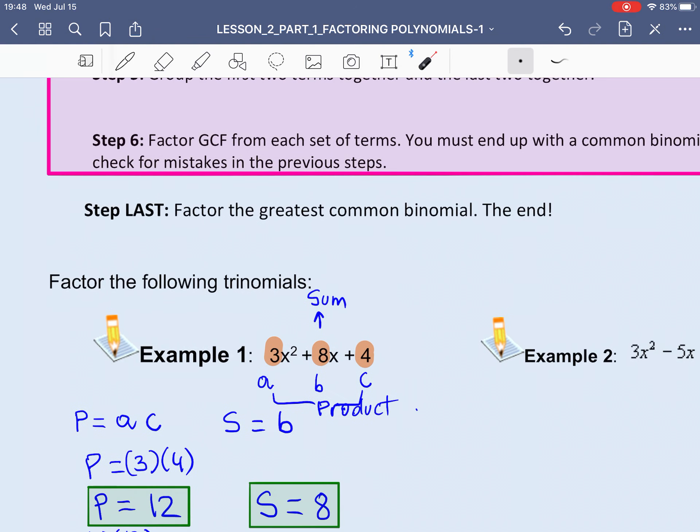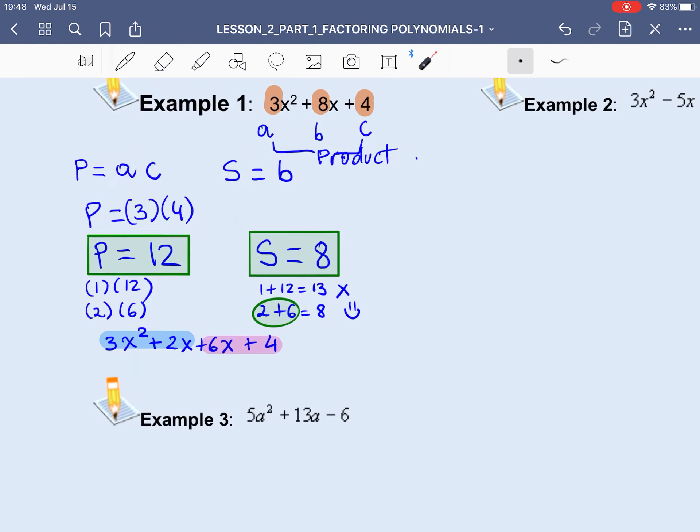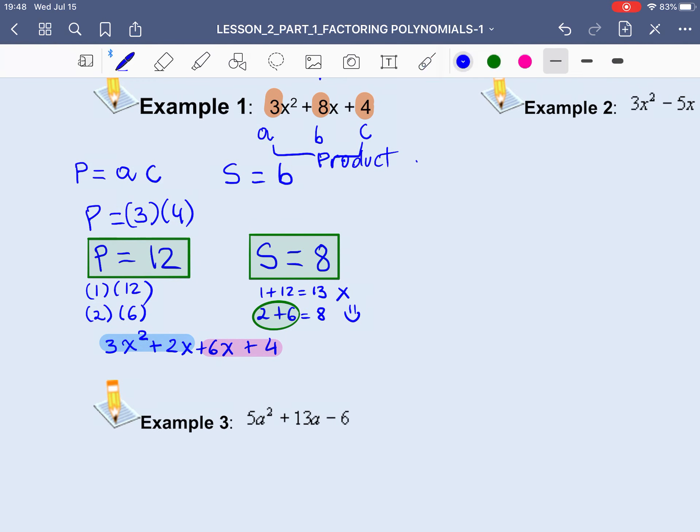And then the next step says you have to factor the greatest common from each set of terms. So from the blue terms in here, I have a common factor of x. If I take x out, then we are left with 3x + 2. And that will be just the blue part of our expression, right, that we have above. And then we do the same thing with the pink terms. We look for the greatest common factor of the pink terms here. And the greatest common factor here must be 2. In brackets, you will have 3x + 2. So there go the other two terms now with the greatest common factor out.